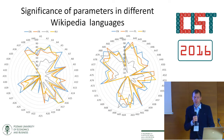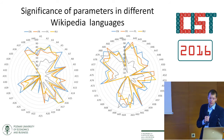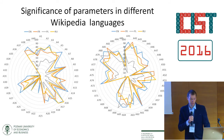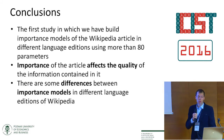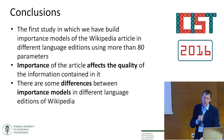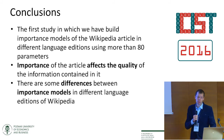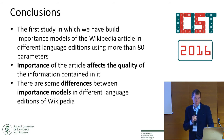Data mining algorithms can show us the significance of parameters, and we can compare models across each language. You can see that there are some differences between models of these four language editions. In conclusion, in this work we have shown that the importance of an article affects the quality of the information contained in it, and this is the first study in which such models have been built.